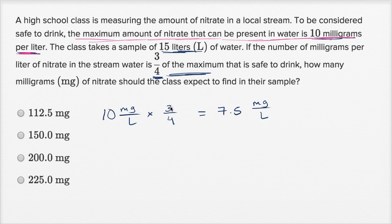You could have done it other ways. You could say 10 times 3 is 30, 30 divided by 4 is seven and a half, and you keep your units. So this is the concentration that they find in their sample: 7.5 milligrams per liter. And they find this concentration in 15 liters of water.